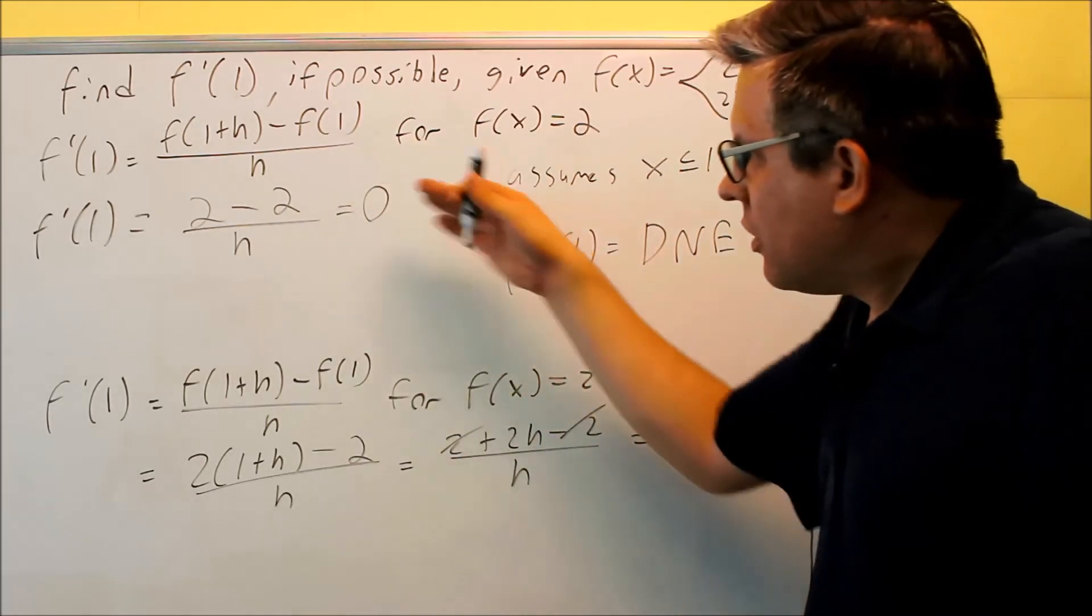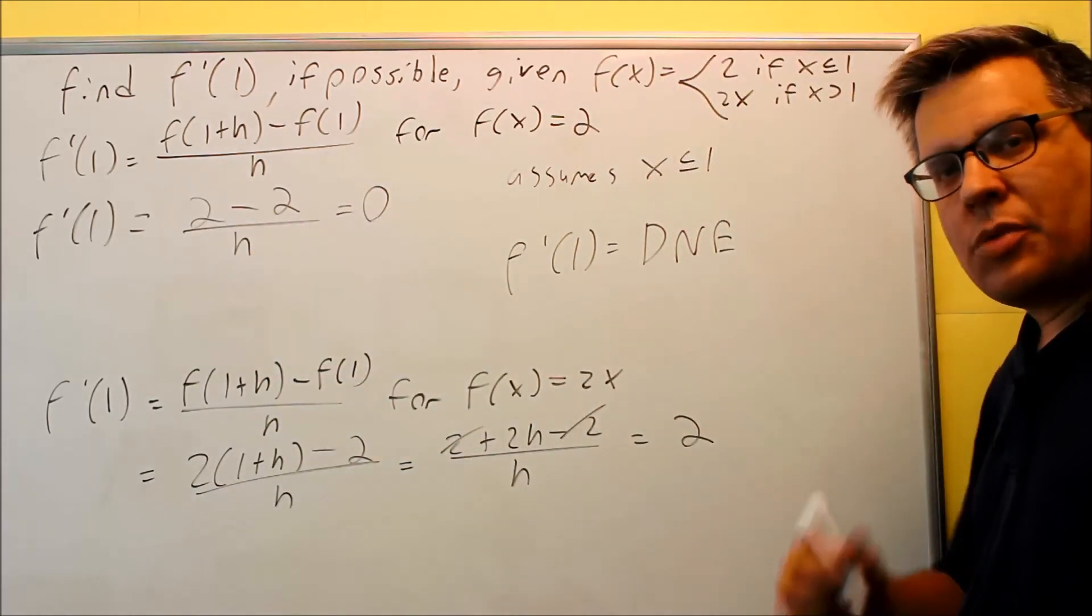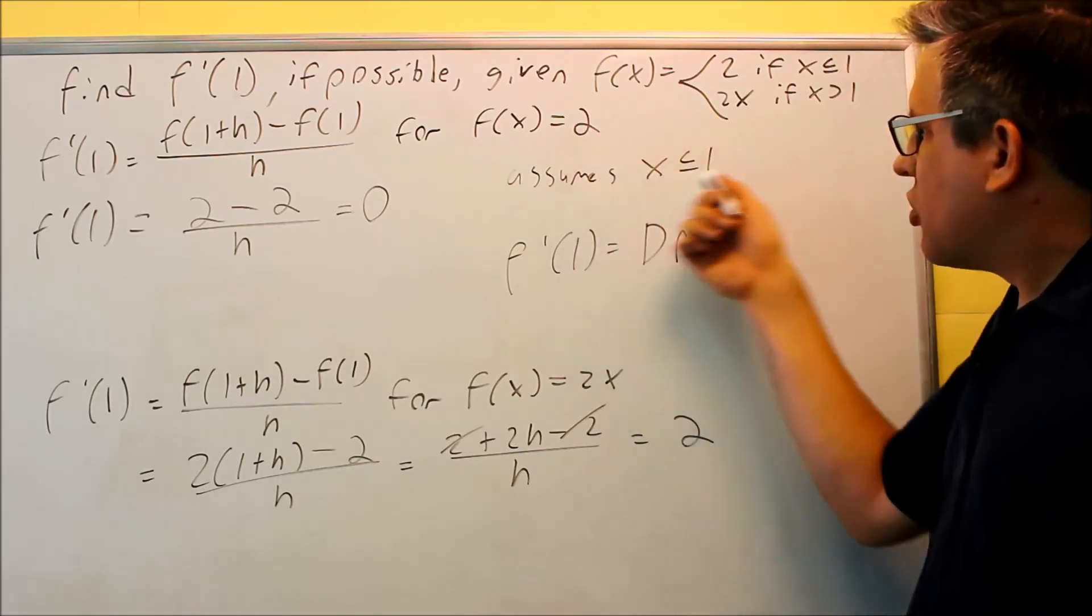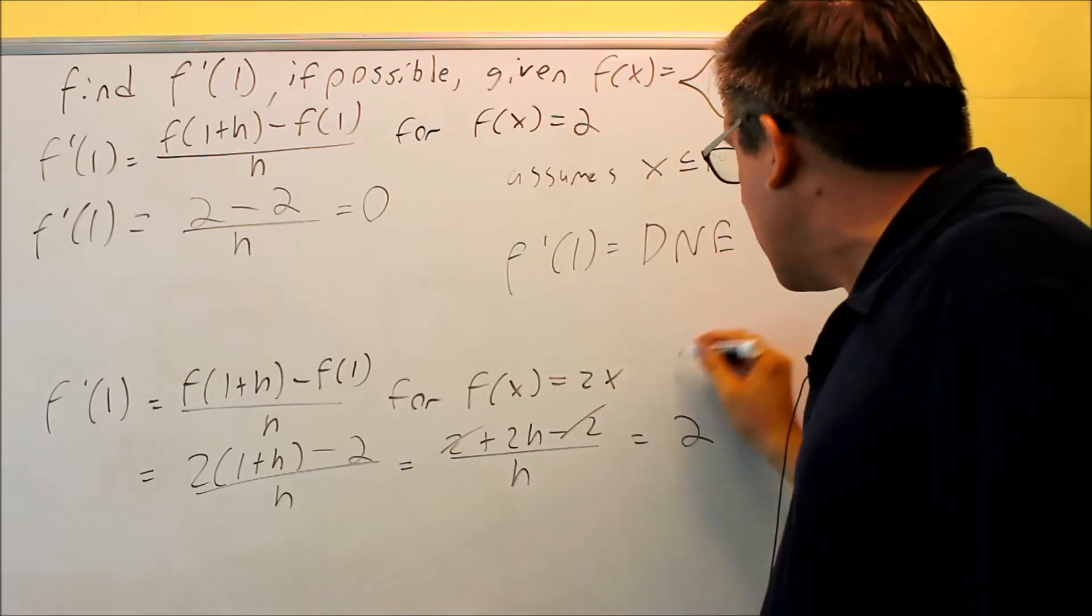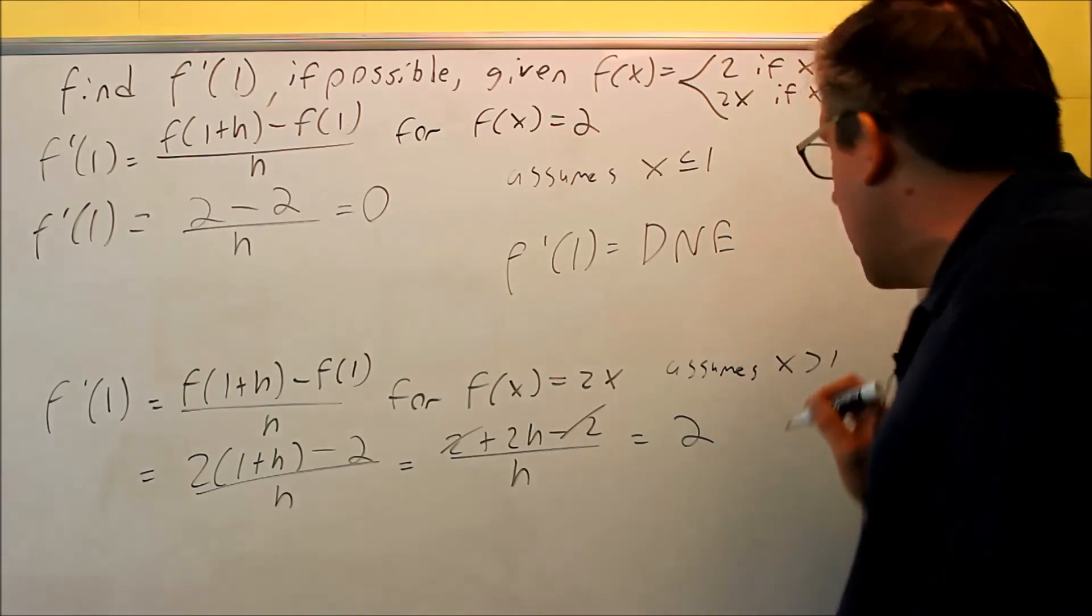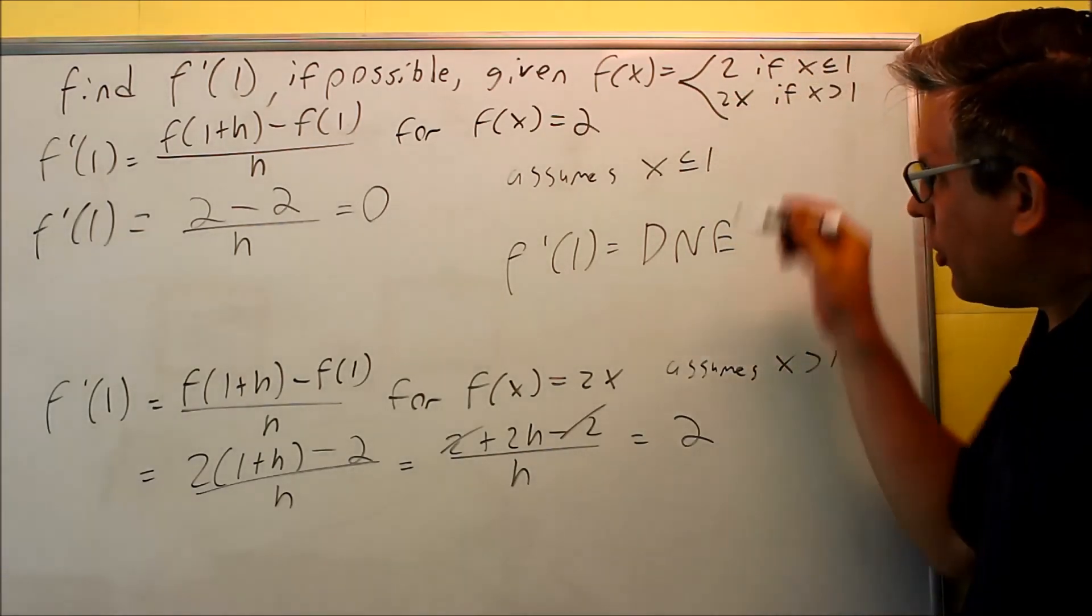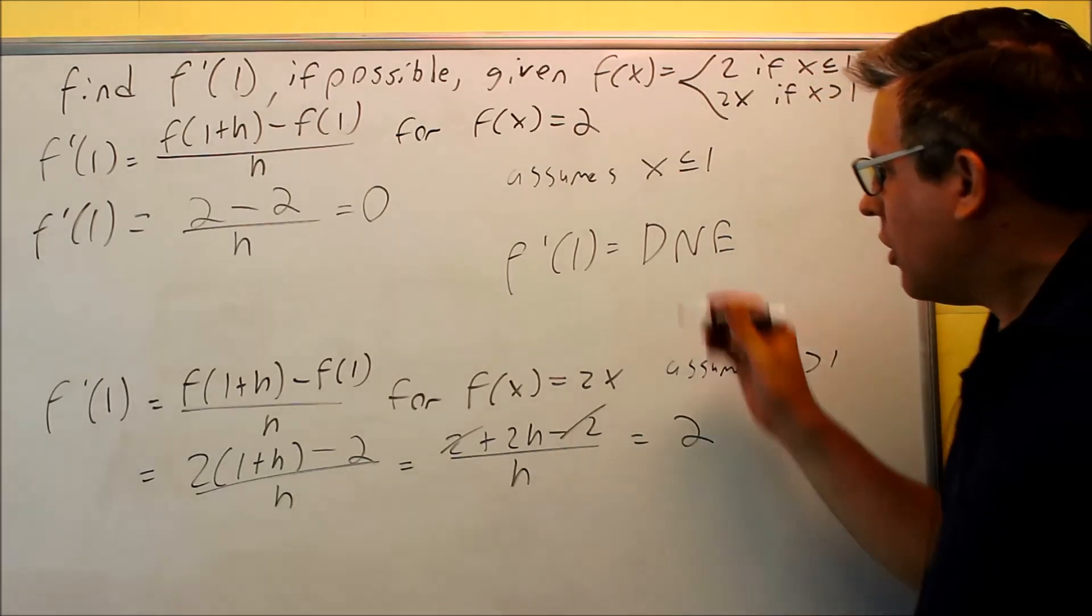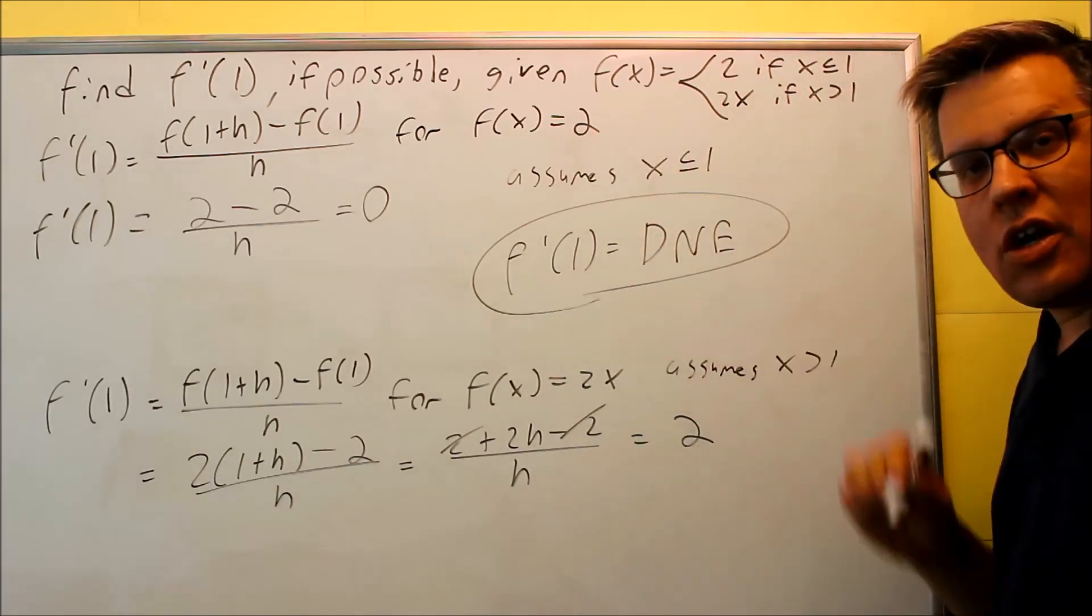Because the limit at 1 approaches two different things, that limit doesn't exist, and so if the limit doesn't exist, that means the derivative also does not exist. This one was assuming that x is less than 1, when I work with the first one, this one down here assumes that x is greater than 1. We're using only these specified values because we're following the piecewise function, but doing so, because you get two different values, does not exist.